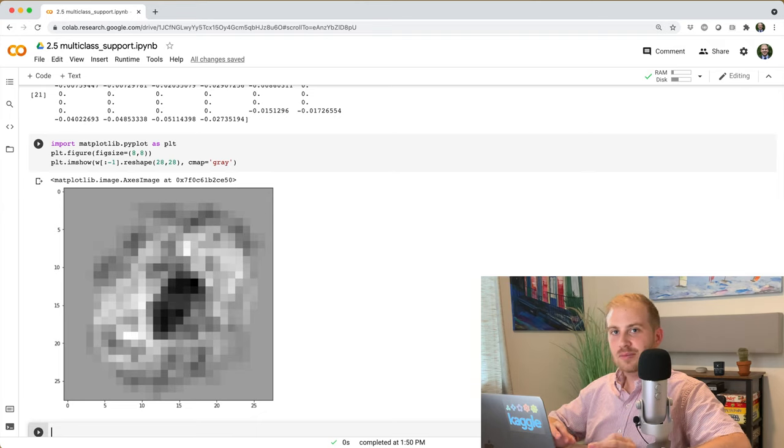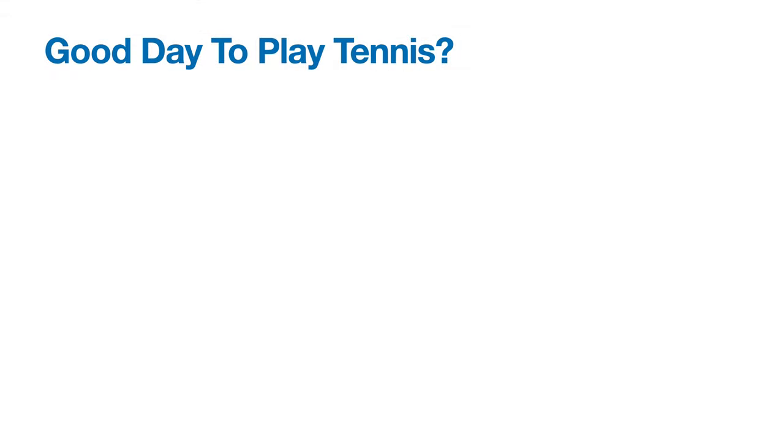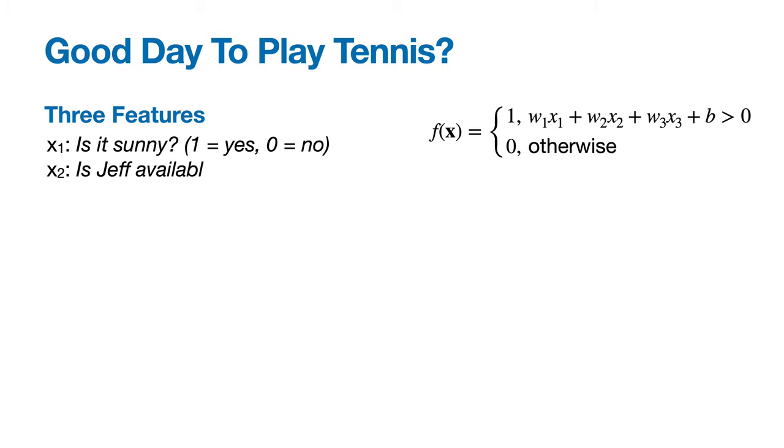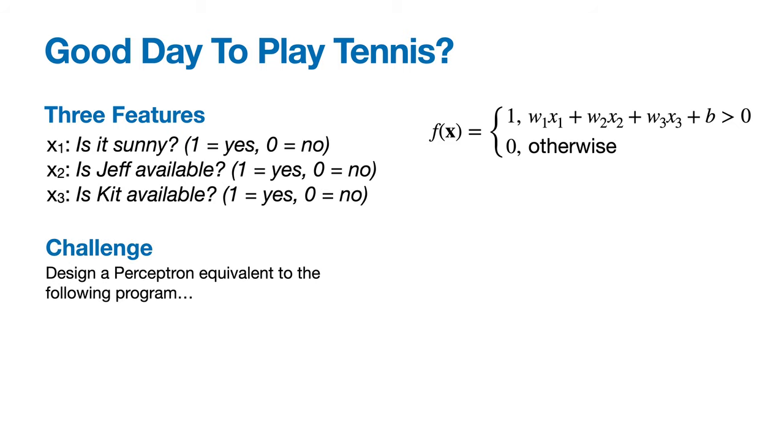With that said, the perceptron still has a big, big pitfall. Before I explicitly state what that is, let's think about a simpler problem. Suppose you want to build a model that predicts whether it's a good day to play tennis. This model has three inputs, all of which are binary features. Is it sunny? Is your friend Jeff available to play? And is your friend Kit available to play?